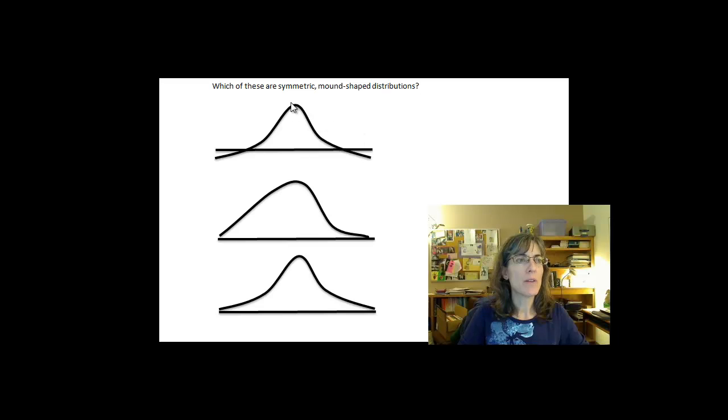Here I have one that I'm wondering if it's a symmetric mound-shaped distribution, and it sure looks symmetrical. If I draw a line right here and I fold it over, it looks like both halves will be equal. The problem comes over here.